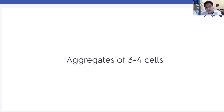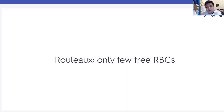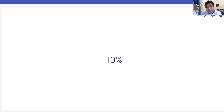Rouleaux grading: 1+ — aggregates of 3 to 4 cells. 2+ — aggregates of 5 to 10 cells. 3+ — only a few free RBCs, most are already in rouleaux formation. Polychromasia grading: 1% corresponds to 1+ polychromasia; 3% corresponds to 1+ polychromasia; 5% corresponds to 3+ polychromasia; greater than 11% corresponds to 4+ polychromasia.